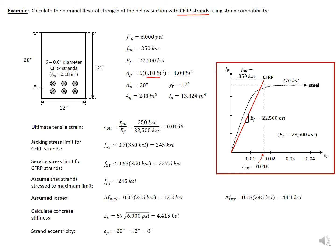The behavior of CFRP strands is much different than our conventional steel strands. We have a linear elastic response all the way up until failure. It has a slightly lower modulus than our steel strands, but a higher strength — around 350 ksi for our ultimate strength. These strands have much less ductility than conventional steel strands, so we need to use a different procedure — strain compatibility — to find our flexural strength.